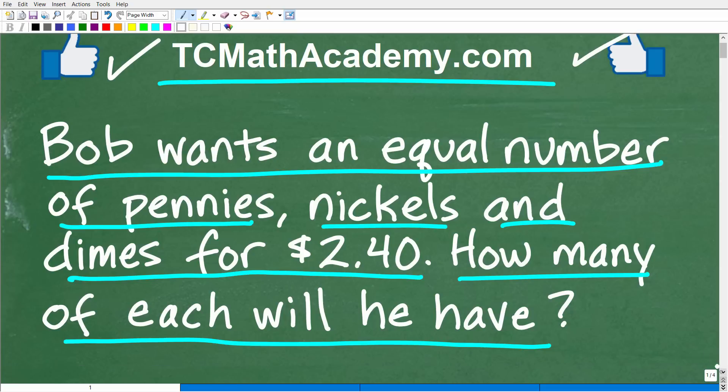Okay, so again, we have Bob. He has his $2.40. He wants an equal number of pennies, nickels, and dimes. How many of each coin will he have? Well, of course, it has to be the same number, right? Because he wants an equal number.